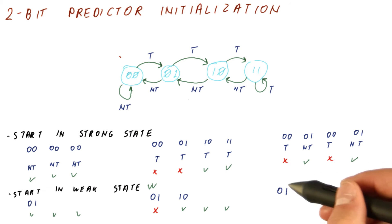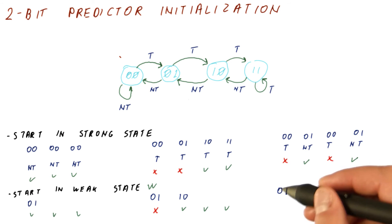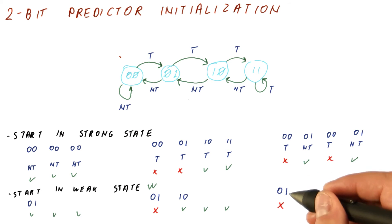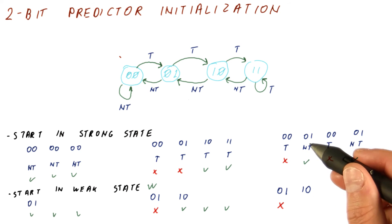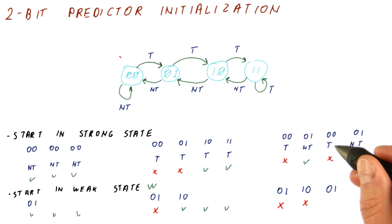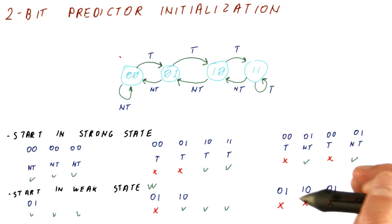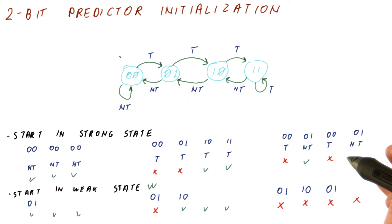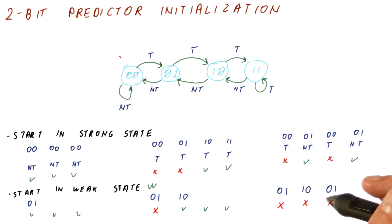But if we start in the wrong weak state and have the same alternating behavior — if the branch is taken and we have a weak not taken, we mispredict and move to the weak taken state. Now the branch is not taken, so we mispredict again and move back to the weak not taken state. The branch is taken again, so we mispredict again, and we keep mispredicting like this. So as far as worst case behavior on alternating branch decisions is concerned, starting in a weak state runs some more risk of having this worst case behavior of always mispredicting.